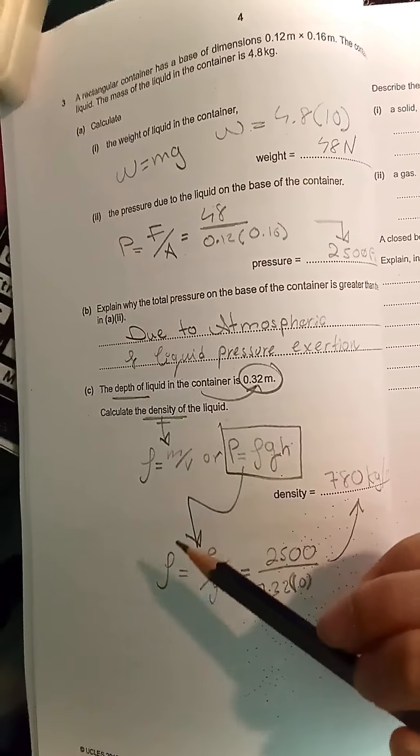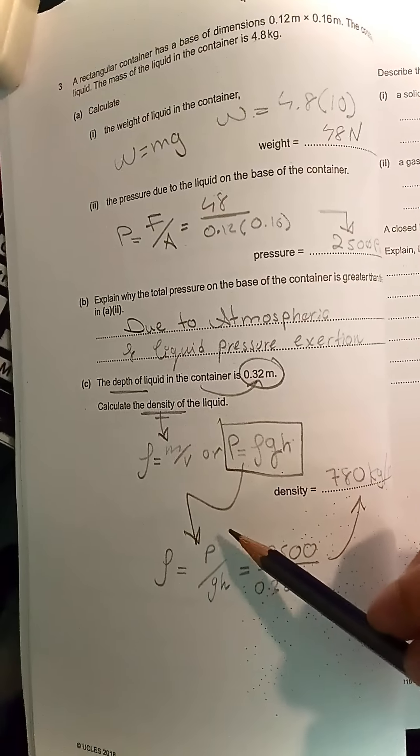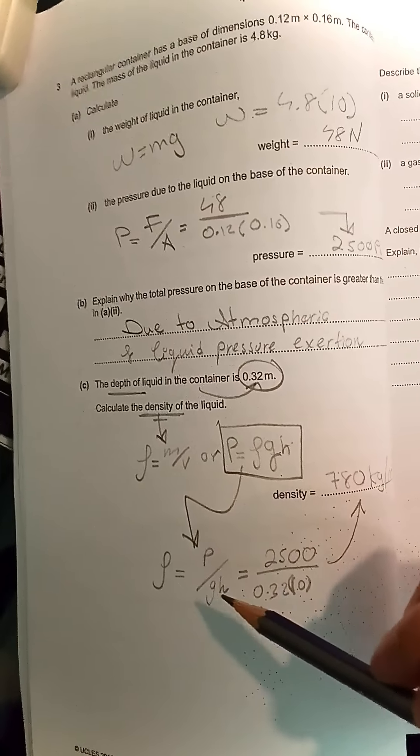Rearranging the formula to isolate density: density equals pressure divided by gravitational field times height.